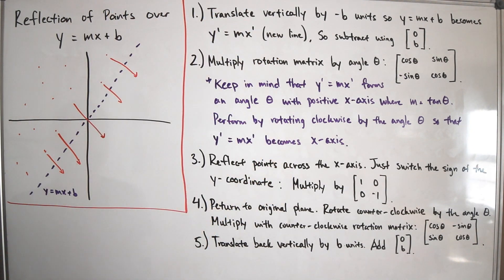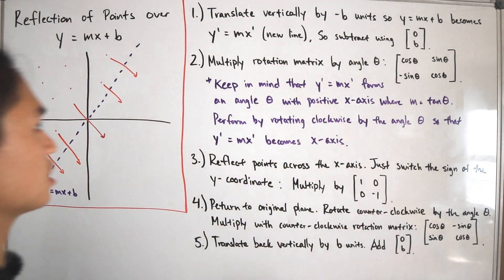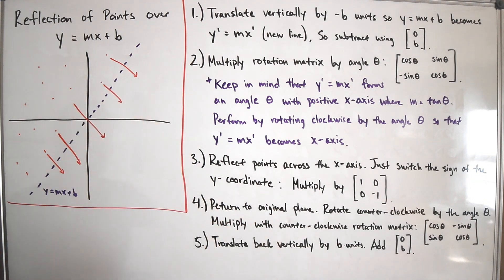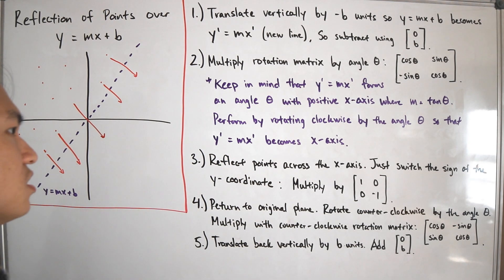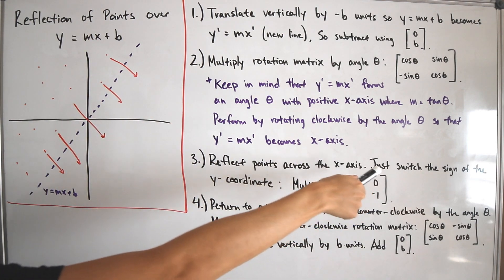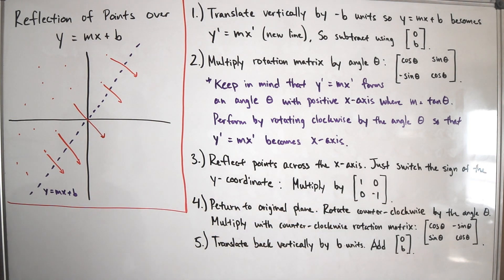Step 2 is to rotate clockwise using the rotation matrix — cosine θ, negative sine θ, sine θ, cosine θ — where θ is the angle the line makes with the positive x-axis, and m equals tangent θ. Rotating by angle θ clockwise makes the line become the x-axis. Step 3 is to reflect over that x-axis by multiplying by the matrix [1, 0; 0, −1], which simply switches the signs of the y-coordinates.